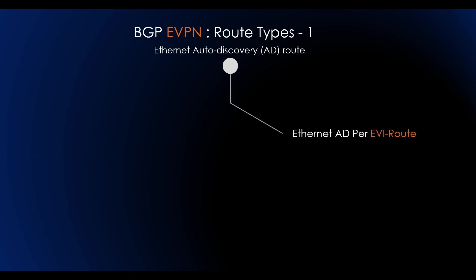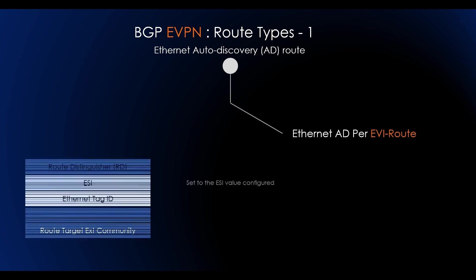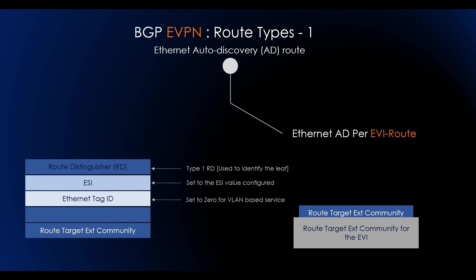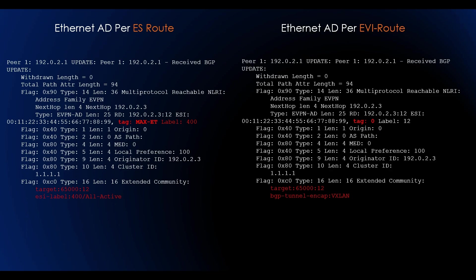The second one is Ethernet AD per EVI route, which is being used for aliasing and load balancing. The route distinguisher is used to identify the leaves. The ESI is set to the ESI value configured. Here the Ethernet tag ID will be zero for VLAN-based services, and the route target extension will carry the route target which is configured inside EVI. So this is the difference between AD per ES route and AD per EVI route.